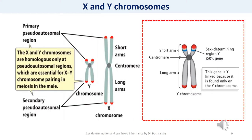Here is a comparison between the X and Y chromosomes. Both chromosomes have a short arm and a long arm, and in both arms you see a pseudo-autosomal region — the region common between X and Y chromosomes. The X and Y chromosomes are homologues only at these regions, which are essential for pairing during meiosis in males. On the Y chromosome, the blue band on the short arm is the sex-determining region on the Y chromosome, or SRY gene — this gene is Y-linked because it is found only on the Y chromosome.